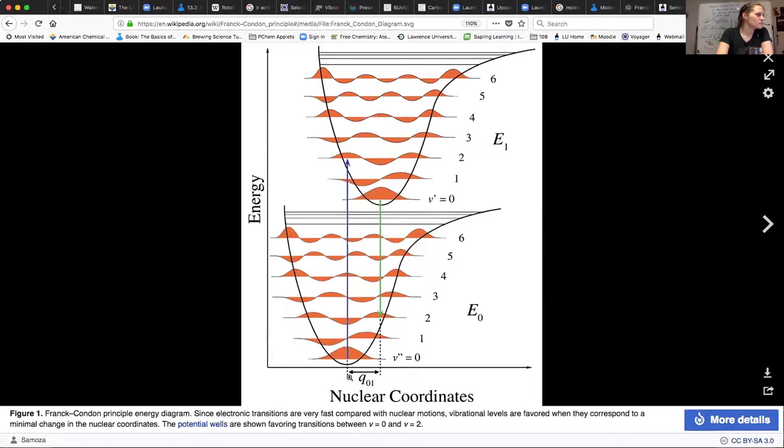Okay, energy versus nuclear coordinates. Internuclear distance, there's my v=0, and then we got the larger higher energy state.